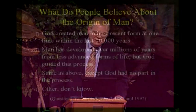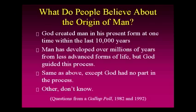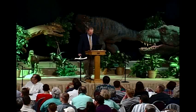The Gallup organization has done a number of surveys to see what people think about evolution and specifically the origin of man. In several surveys ranging from 1982 to 1992, the following four choices were given: What do you believe about the origin of man? One: God created man in his present form at one time within the past 10,000 years. Two: man has developed over millions of years from less advanced forms of life, but God guided this process. Three: same as above, except God had no part in the process. And four: don't know, possibly don't care.